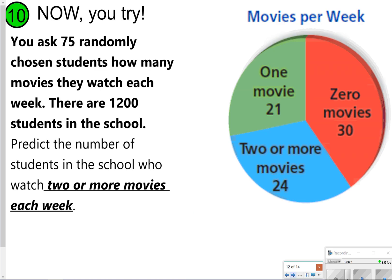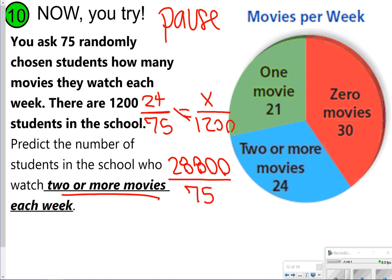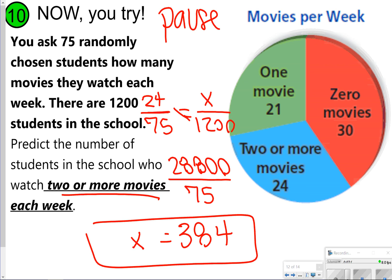Now you'll try the next one using the same setup. Predict the number of students who would watch two or more movies each week. Two or more movies was chosen by 24 out of 75 students, and we want to find how many out of 1,200. Multiply 24 times 1,200 to get 28,800, then divide by 75, which gives 384 students who watch two or more movies each week.